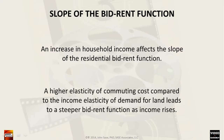In addition, commuting costs will impact the bid-rent function. A higher elasticity of commuting costs compared to the income elasticity of demand for land leads to a steeper bid-rent function as income rises. Commuting costs in themselves are a matter of both time cost and physical cost. The steepening of the bid-rent curve suggests that as income increases, residents may prefer to move closer to the CBD due to the relative value of the time cost, or move further out as other amenities take precedence.